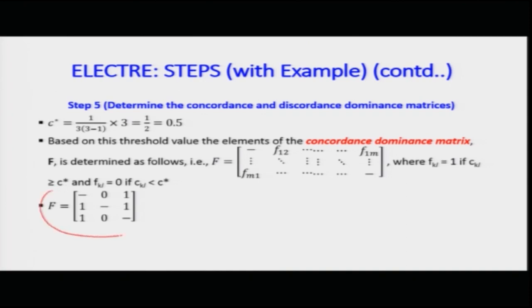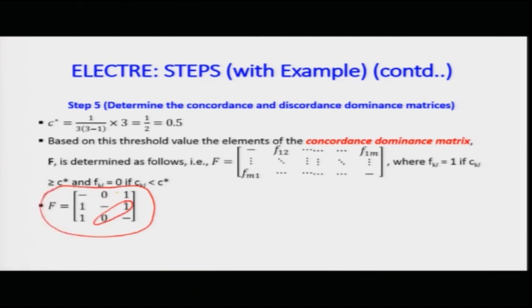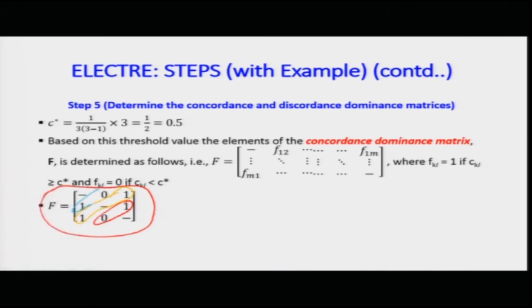The concordance dominance matrix has dashes on the diagonal (cells 1,1; 2,2; 3,3). Reading along the rows, the other cell values are: row 1: 0, 1; row 2: 1, 1; row 3: 1, 0.